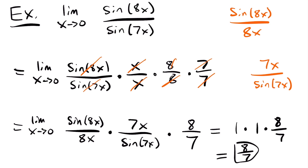That's all you need to know about evaluating limits of trig functions. There are certainly more types, like the one where x approached pi/2, but as long as you know your trig identities, they're not too difficult. If you have any questions, feel free to put them in the comments, and you can click on the example video at the end or find it linked in the description.